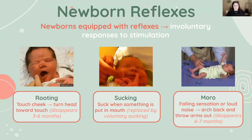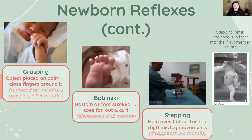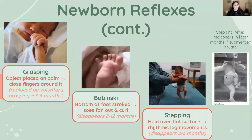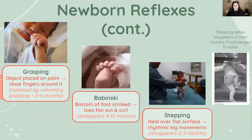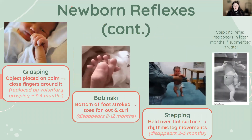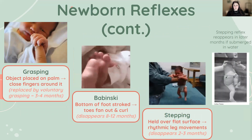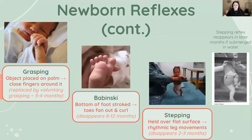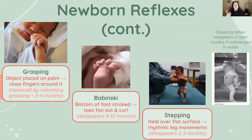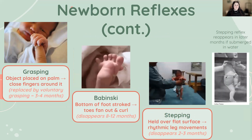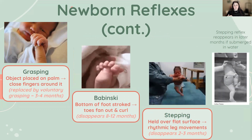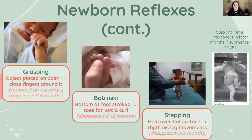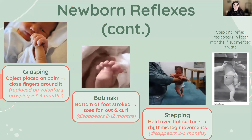Our next involuntary reflex at birth is grasping. When a finger or object is placed in the baby's palm, they'll close their fingers around it as a reflex. This is another sign of normal neurological development, and it typically disappears around three to four months of age when it is replaced by voluntary grasping.